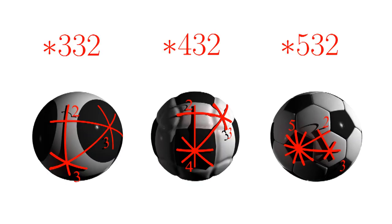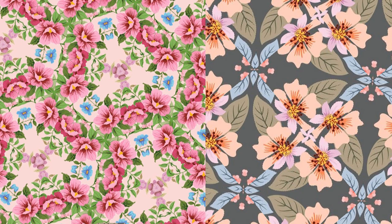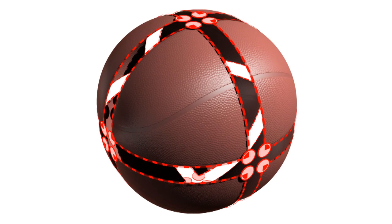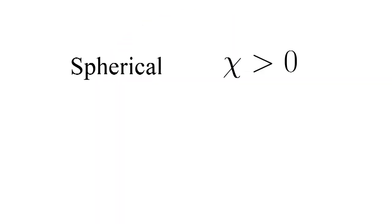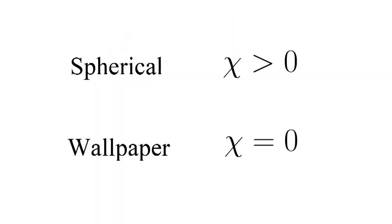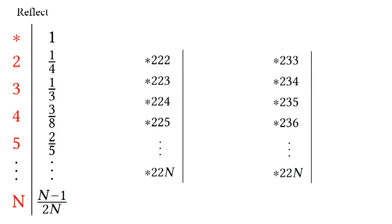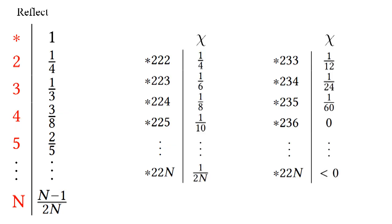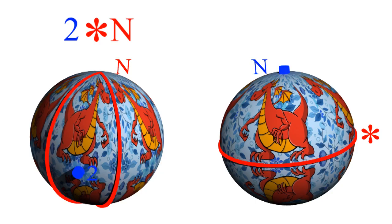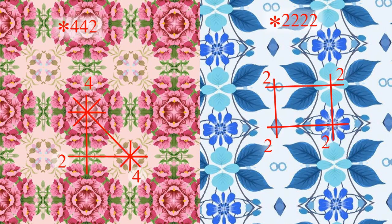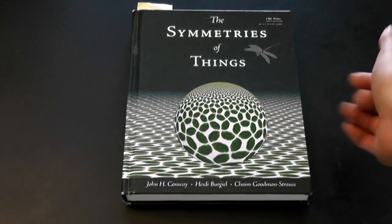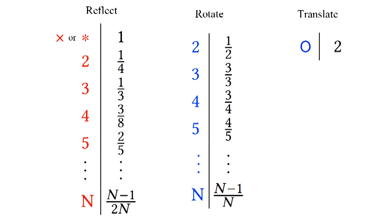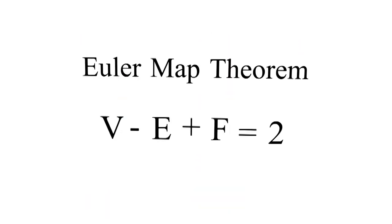In this video, we counted the number of spherical, frieze, and wallpaper symmetries. We saw that each symmetry has an orbifold, and that its characteristic must be positive for spherical symmetries or zero for wallpaper. We tried every possible way of making an orbifold and finding its characteristic, and for every valid orbifold, showed that the symmetry actually exists by constructing an example. There's lots more in the book — it talks about other kinds of symmetries and shows why this list of operations on orbifolds is complete. The argument is based on the Euler map theorem, which I will prove in my next video. If you like this video, please click subscribe.